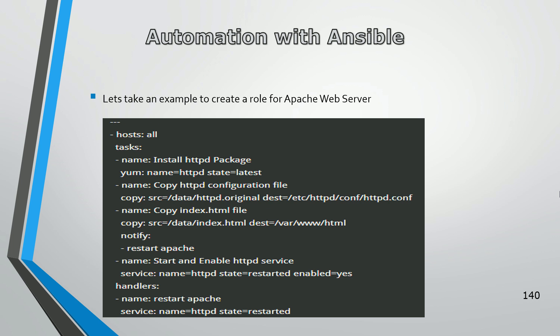If there is no role, we have to create a simple playbook in which we specify different tasks like the installation of the HTTP package, then copy some configuration file like the HTTP configuration file, also copy the index file. Then we restart the services using a handler, and at last start and enable the HTTP server. This is what your playbook looks like for the installation of Apache web server on your client machine.